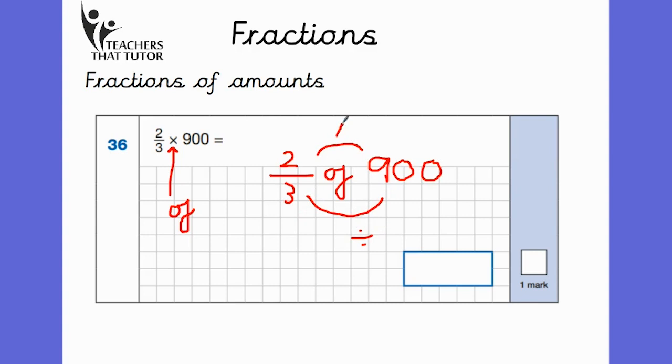So if I do 900 divided by the denominator, the bottom, I get 300. And then if I multiply 300 by the numerator, which is the top number, because I'm looking for not one third but two thirds, I'm going to do 300 times two, which gives me a final answer of 600, and that will be the correct answer to this question. So for fractions of amounts questions, and this could either say of or it could have the times sign which means the same, you're going to divide by the bottom number and then multiply by the top, and that will give you a correct answer.